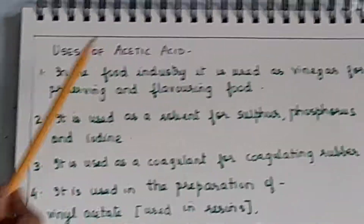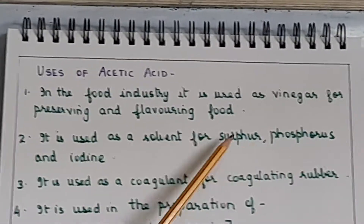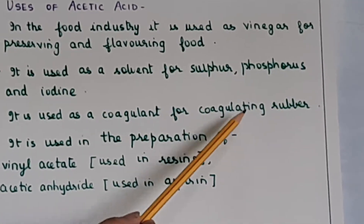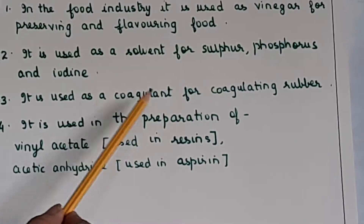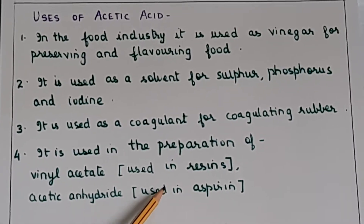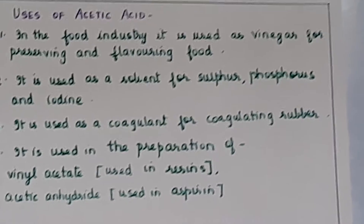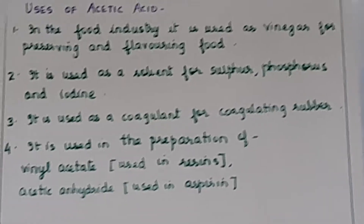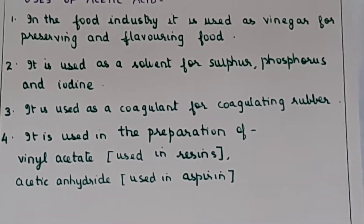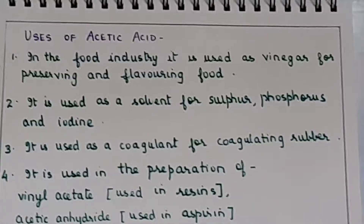Uses of acetic acid: in the food industry, it is used as vinegar for preserving and flavoring food; as a solvent for sulfur, phosphorus, and iodine; as a coagulant in the manufacture of rubber; in the preparation of vinyl acetate (used in resins) and acetic anhydride (used in the manufacture of aspirin). Remember at least two uses for all compounds. With this, we have completed all the explanation of the entire organic chemistry chapter — general organic chemistry, alkanes, alkenes, alkynes, alcohols, and carboxylic acids. Now we move to board questions.